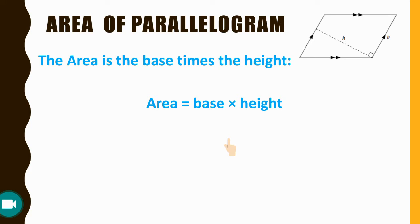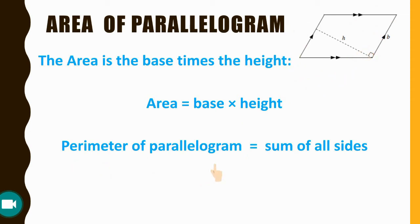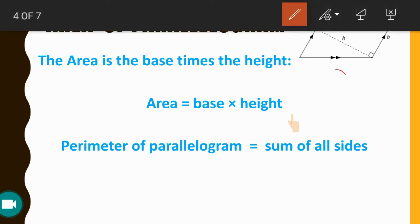What is the perimeter of a parallelogram? The perimeter means the sum of all sides. A parallelogram has four sides — one, two, three, and four. If we sum all of these sides, we get the perimeter of the parallelogram.